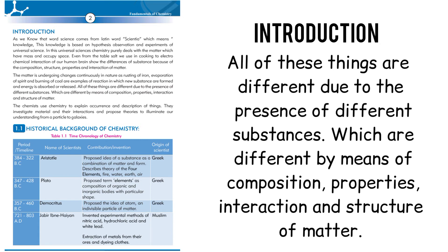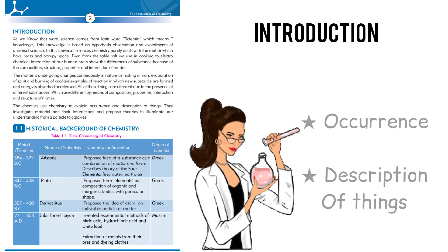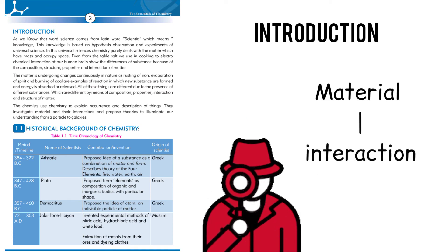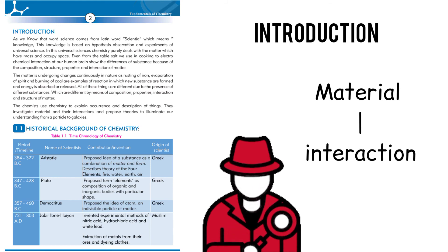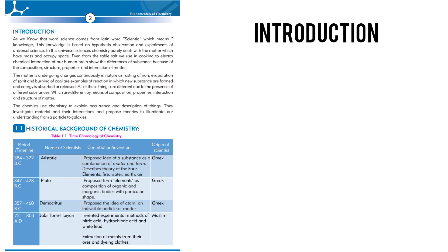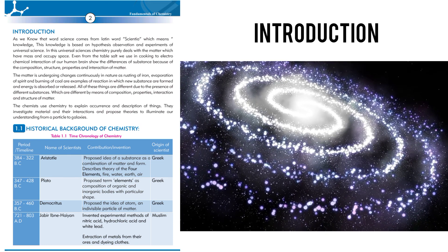Ab ye sab mein different composition hai, properties bhi different hai, interaction of atoms or molecules bhi different hai, structure of matter bhi different hai. So chemists use chemistry to explain the occurrence and description of things. They investigate materials and their interactions and propose theories to enhance our understanding, from a particle to galaxies.